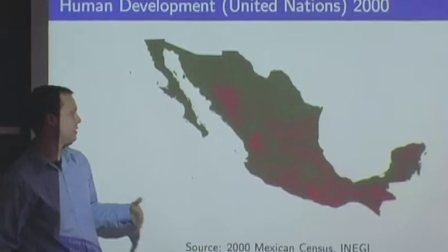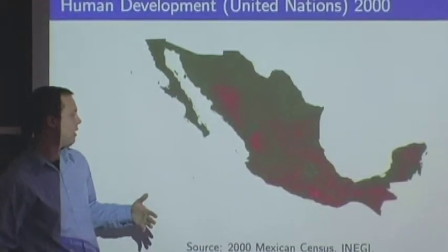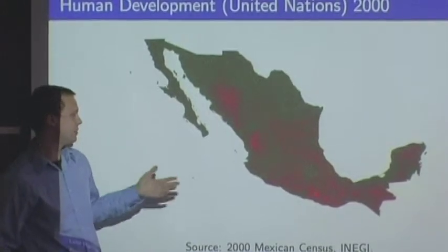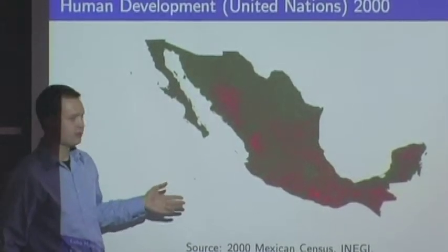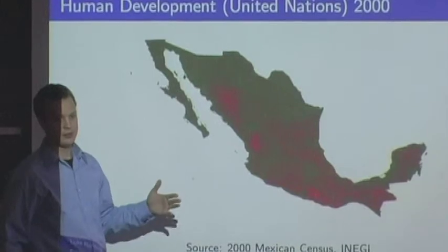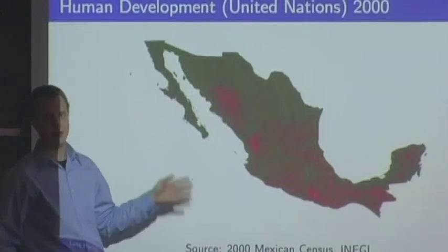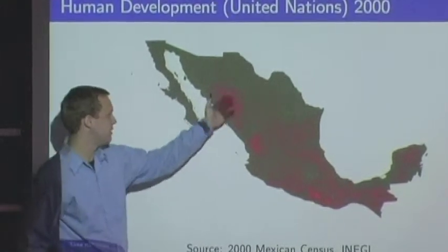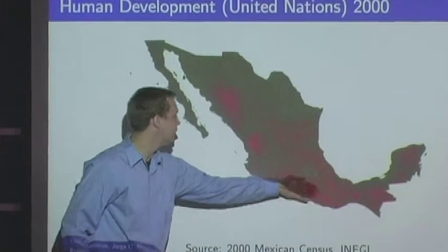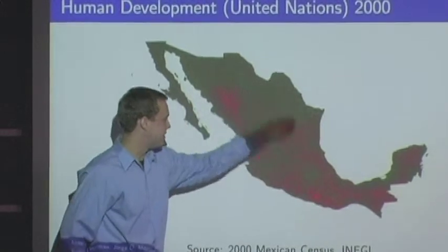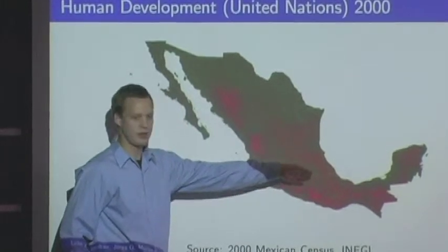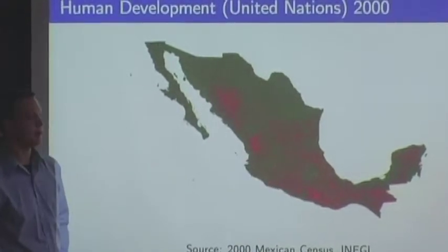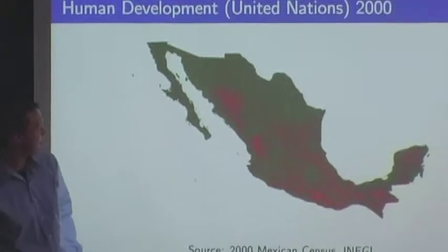Not just in GDP but also in access to services — for example, water, electricity, and financial services. Access to commercial banks is much more limited in these mountainous areas than in urban and border areas, which is sort of a motivation for microfinance interventions.